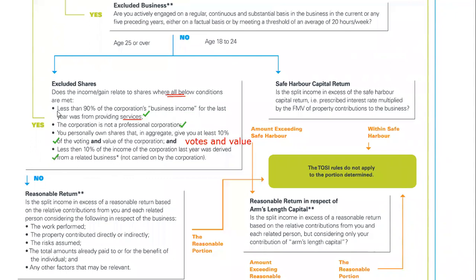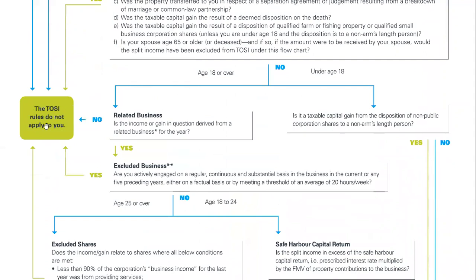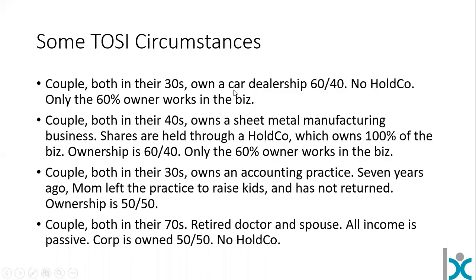We have four check marks here, which means the yes applies and we get to where we want to go. We can follow that box up and see that for this particular instance — for our car dealership example — the TOSI rules do not apply. Good news for that couple, assuming that my interpretations are correct, which I would absolutely want to confirm with a qualified tax professional. I suspect we'll have some questions about this come through the courts in the first four or five years after these rules come out, and as I previously mentioned, I would not be surprised to see rule changes.